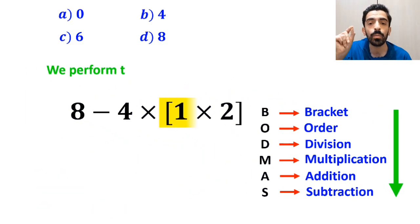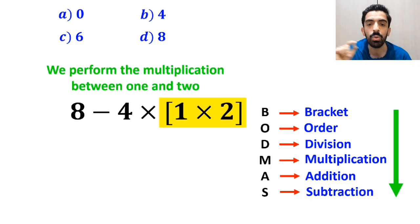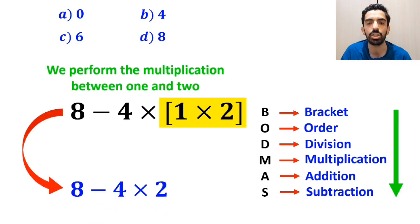In the next step, we perform the multiplication between 1 and 2, and this expression simplifies to 8 minus 4 times 2.